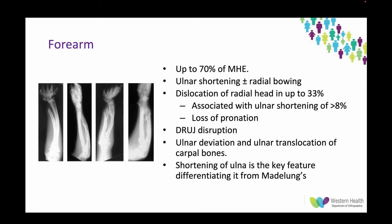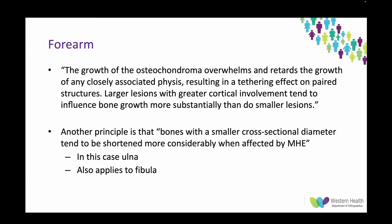Forearm deformity is present in up to 70% of patients — typically ulnar shortening and radial bowing, with dislocation of the radial head in up to a third. The main finding is a loss of pronation. You can get DRUJ disruption, ulnar deviation, ulnar translocation of the carpal bones, and shortening of the ulna is the key feature differentiating it from Madelung's deformity on x-ray. The growth of the osteochondroma tethers the associated physis. Bones with a smaller cross-sectional diameter, like the ulna and fibula, tend to be shortened more considerably when affected by MHE.